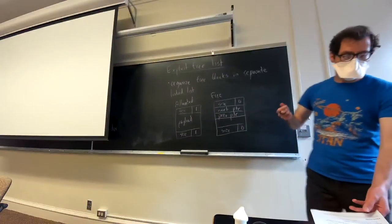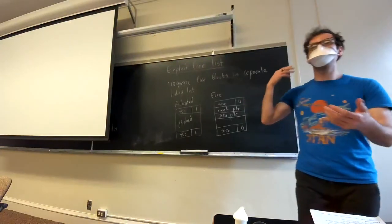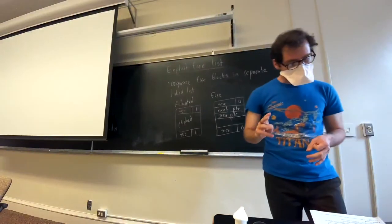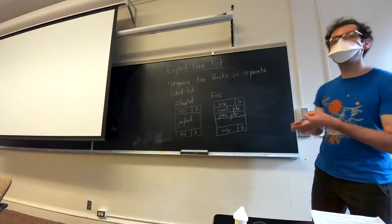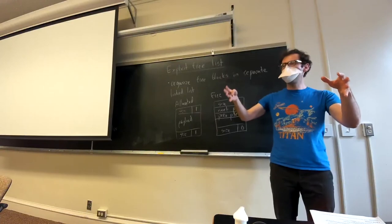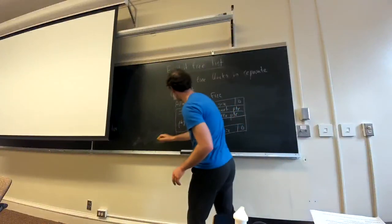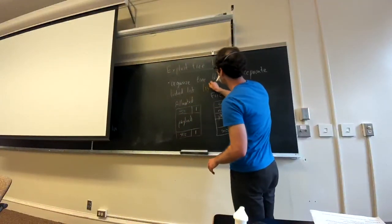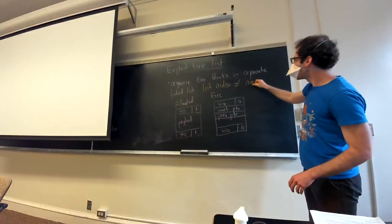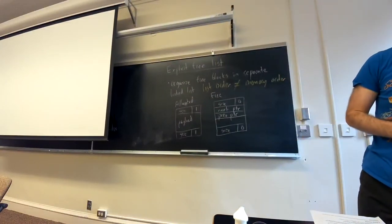Many things from the implicit free list still work the same way: the same placement policy, same splitting, and same coalescing — because when we free a block we still look for its actual neighbors in memory to coalesce with. An important fact about this free list is that the order of things in the linked list does not match the order of things in memory.